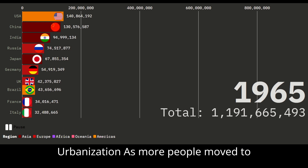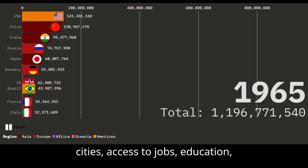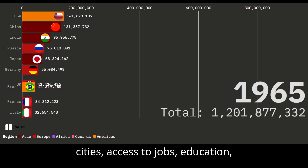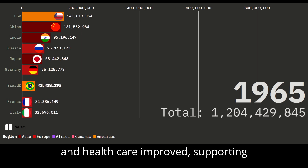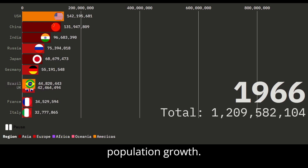Urbanization also played a role: as more people moved to cities, access to jobs, education, and healthcare improved, supporting population growth. These factors combined to create a perfect storm for population growth.